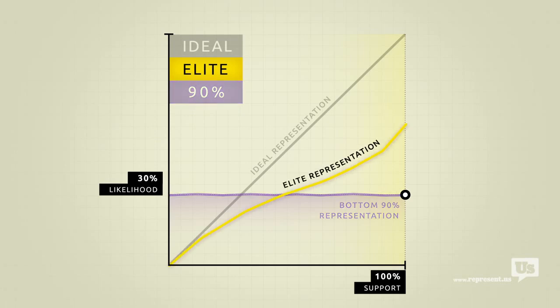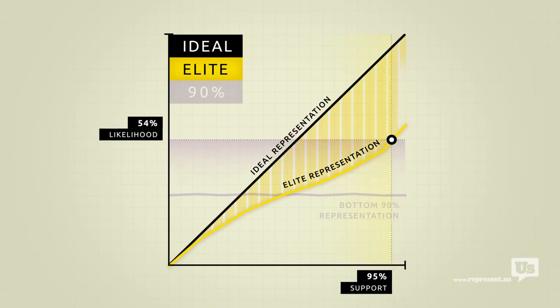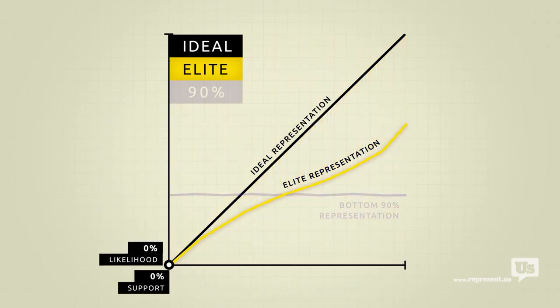Look at how much closer their line is to the ideal. When they want something, the government is much more likely to do it. And when they don't, they have the power to completely block it from happening, no matter how much the rest of the country supports it. They get what they want, and guess who ends up paying for it?